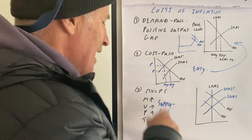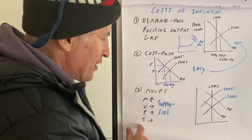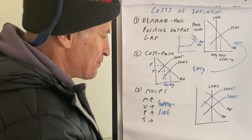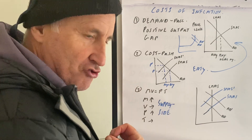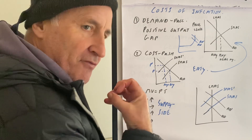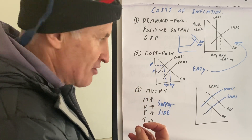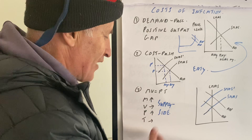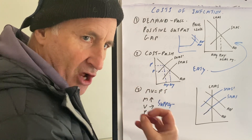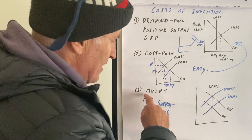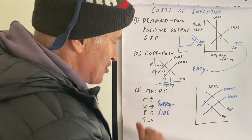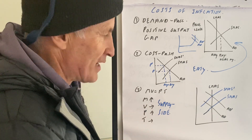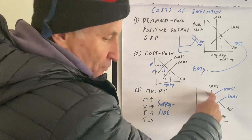The third cause is MV equals PT. This is to do with the belief from monetarists that if the money supply goes up, this will create inflation, because there's a direct link between the money supply and inflation. V and T are always stable.